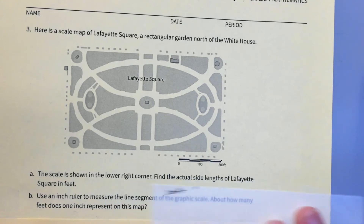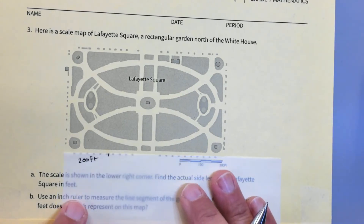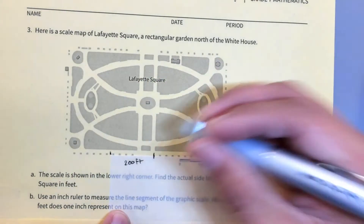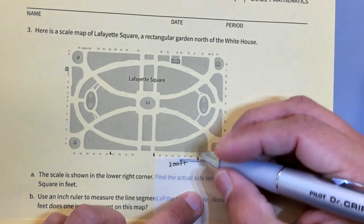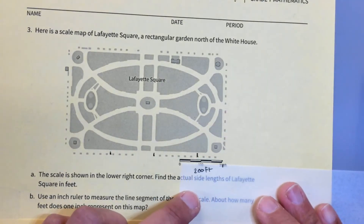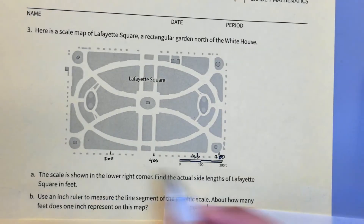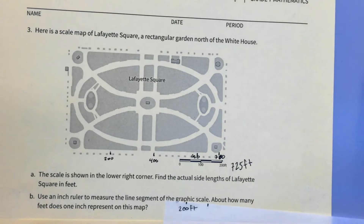So now I'm going to measure the side lengths of Lafayette Square. Going from here to here: there's 200 feet, there's 200 feet, all the way across. And then I'm going to mark 100 feet here. From there to there I get to about 700, and then this little part maybe 725 feet, 730 feet — we're just estimating that little portion there.